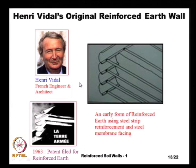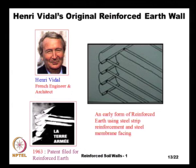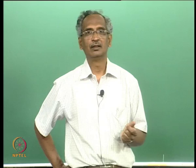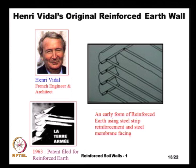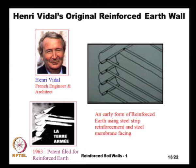Henry Vidal's original proposal used steel strips about 50–60 mm wide and 5–7 mm thick for soil reinforcement, with a slightly curved steel membrane front facing for good aesthetic finish. This was the original proposal in his patent application, which he named 'reinforced earth.' We should not use the term 'reinforced earth' as it infringes the patent rights of the company called Reinforced Earth; instead we use the term 'reinforced soil.'